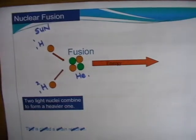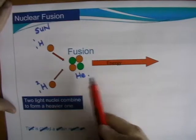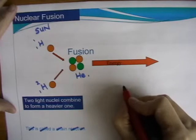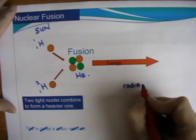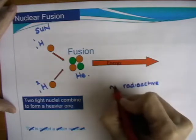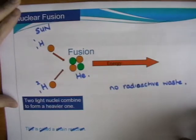Fusion is very, very difficult to control on earth, and it hasn't been done successfully yet. But it gives out huge amounts of energy. There's no danger of radioactive waste or gases. No radioactive waste. It's a much cleaner and much less contaminating process.